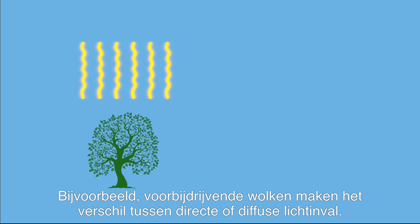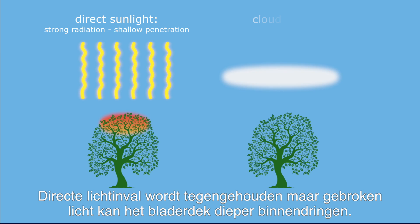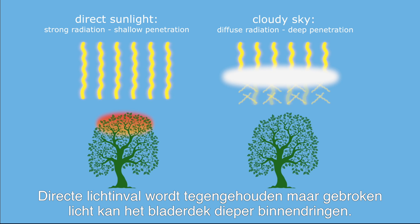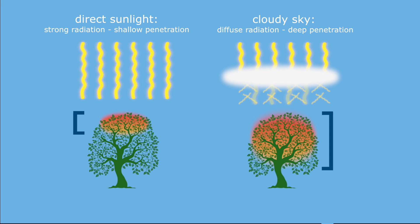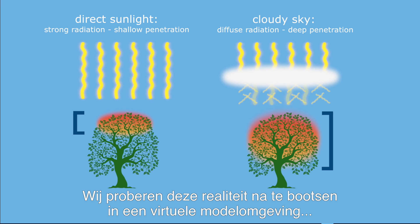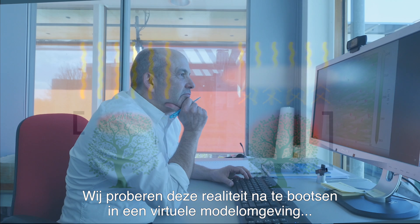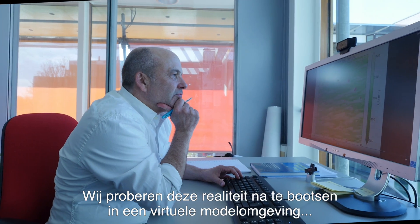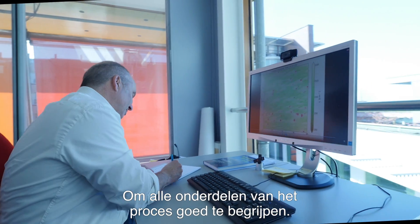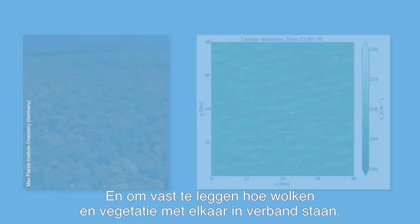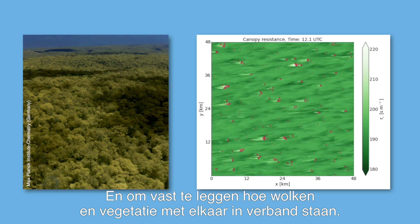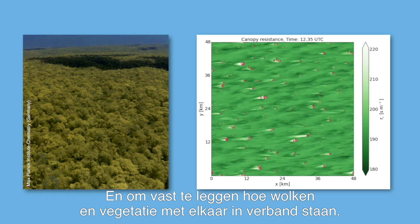For instance, clouds are constantly passing and influencing the direct and diffuse radiation that affects the plant canopy. Direct radiation is damped, but diffuse radiation can penetrate further into the canopy. Our research is to try to reproduce this reality in a virtual numerical laboratory to understand all the different components and to quantify how clouds and vegetation are coupled together.